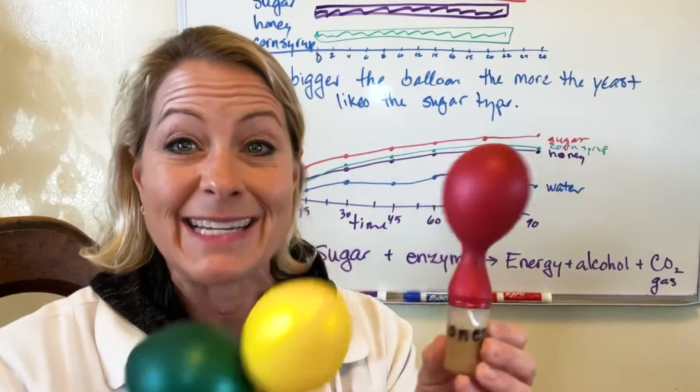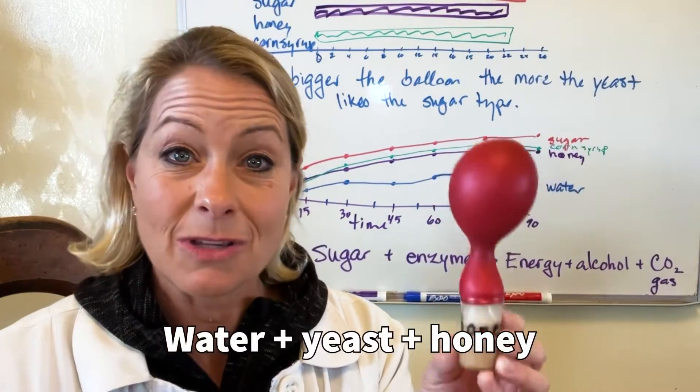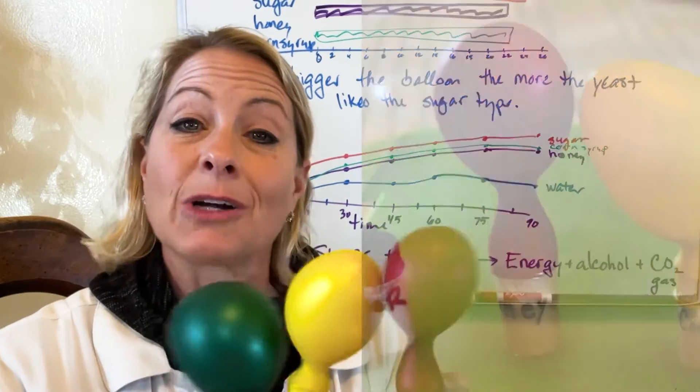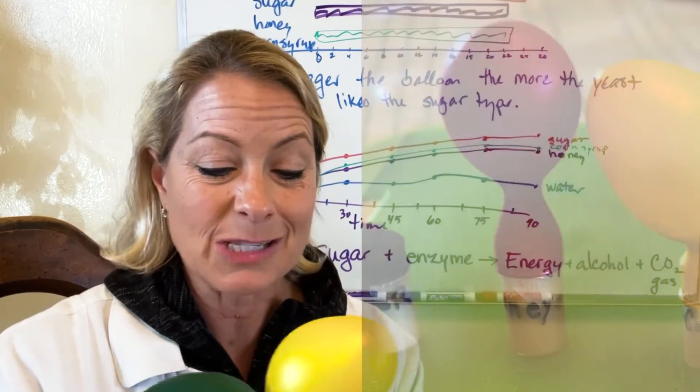In the honey you can see that it did get much bigger, so the yeast was able to convert that sugar of the honey into energy and the byproduct was the carbon dioxide gas forming in this one.